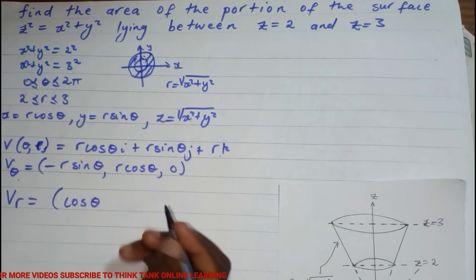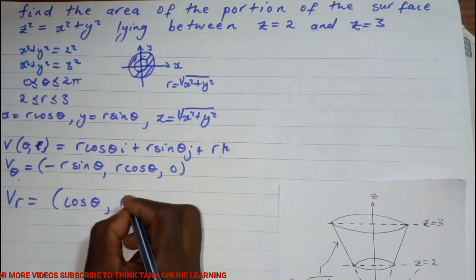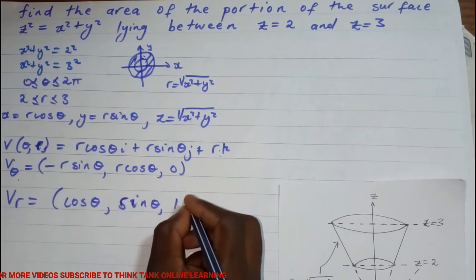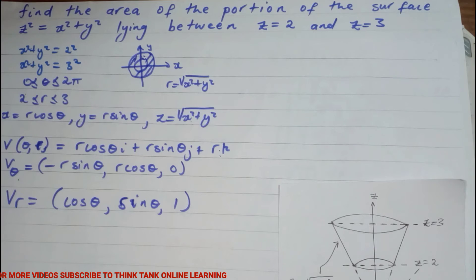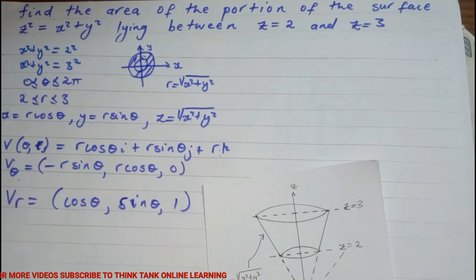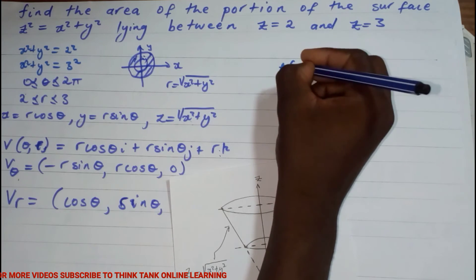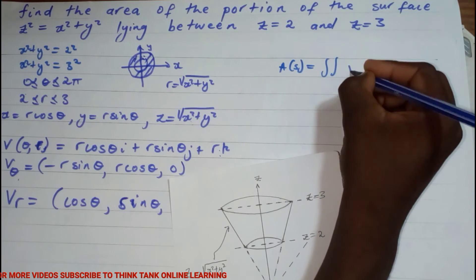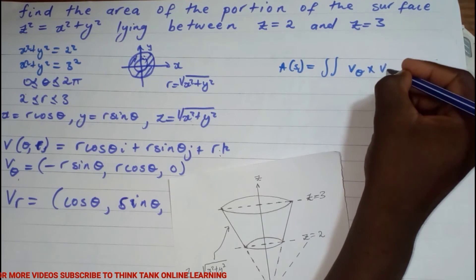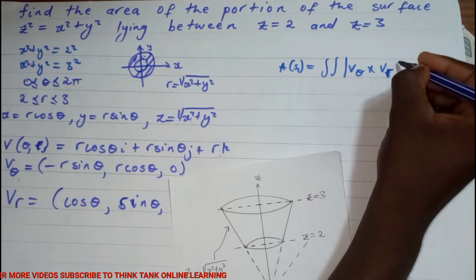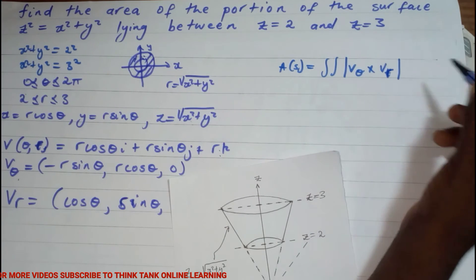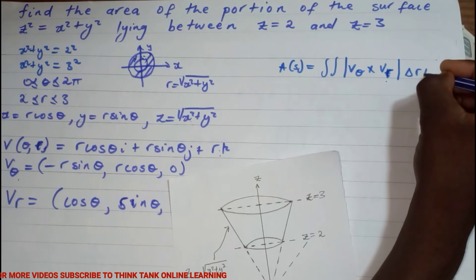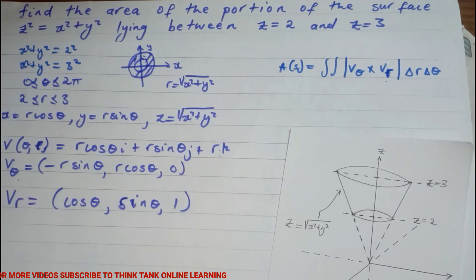Now for V_r, differentiating with respect to r, I get: cosθ for i, sinθ for j, and 1 for k. The formula for finding surface area is the double integral of the magnitude of the cross product V_θ × V_r, integrated over dr dθ.